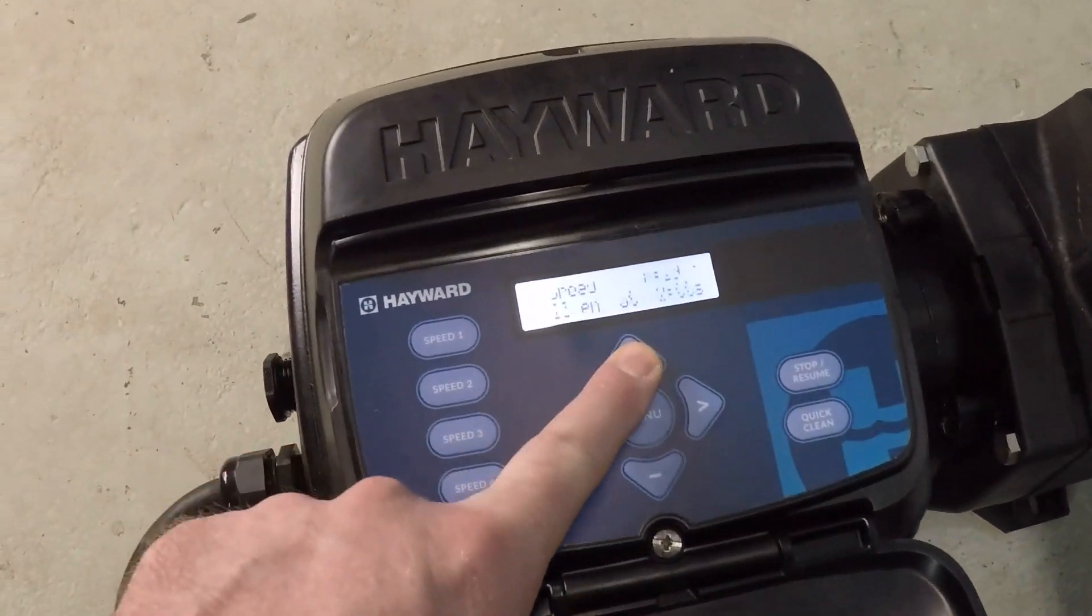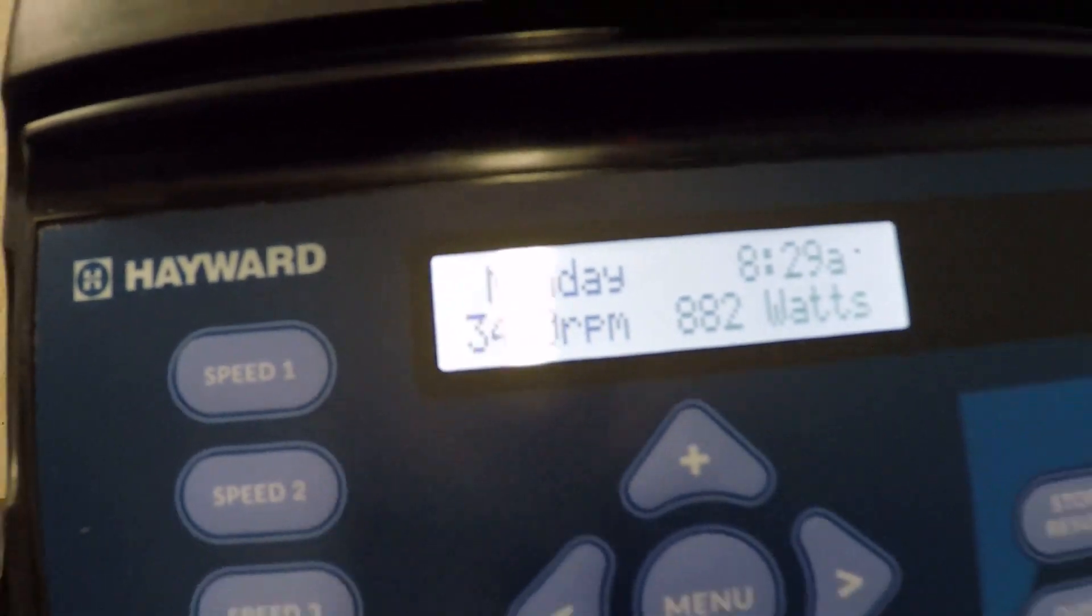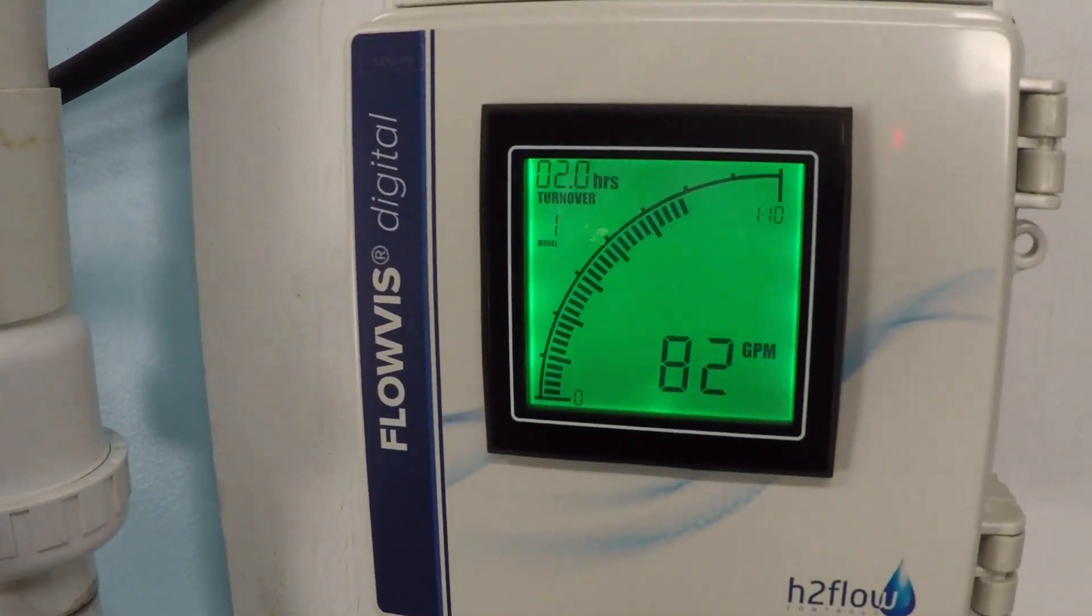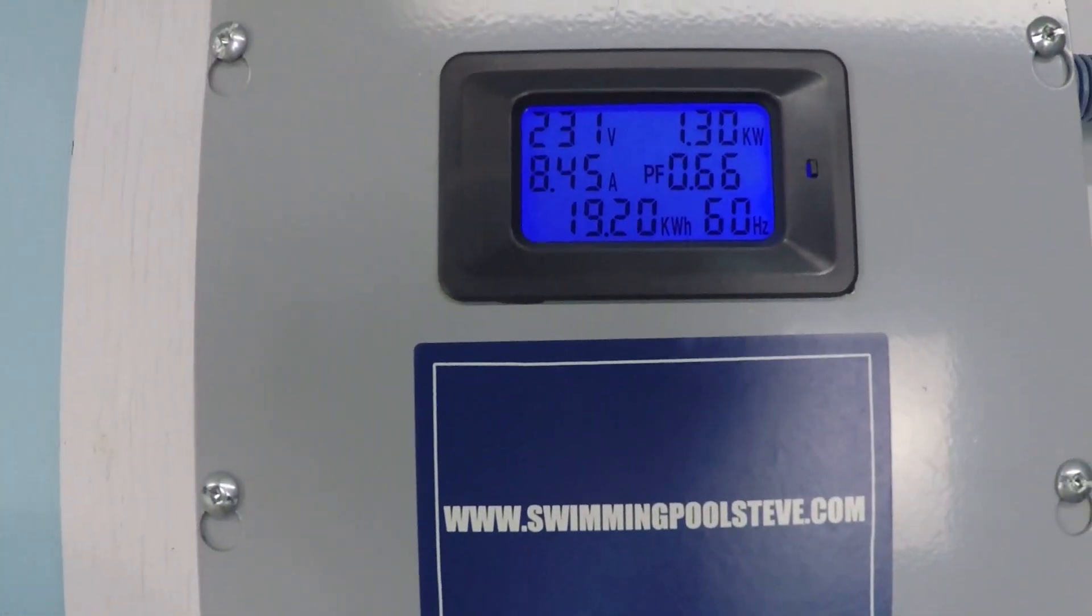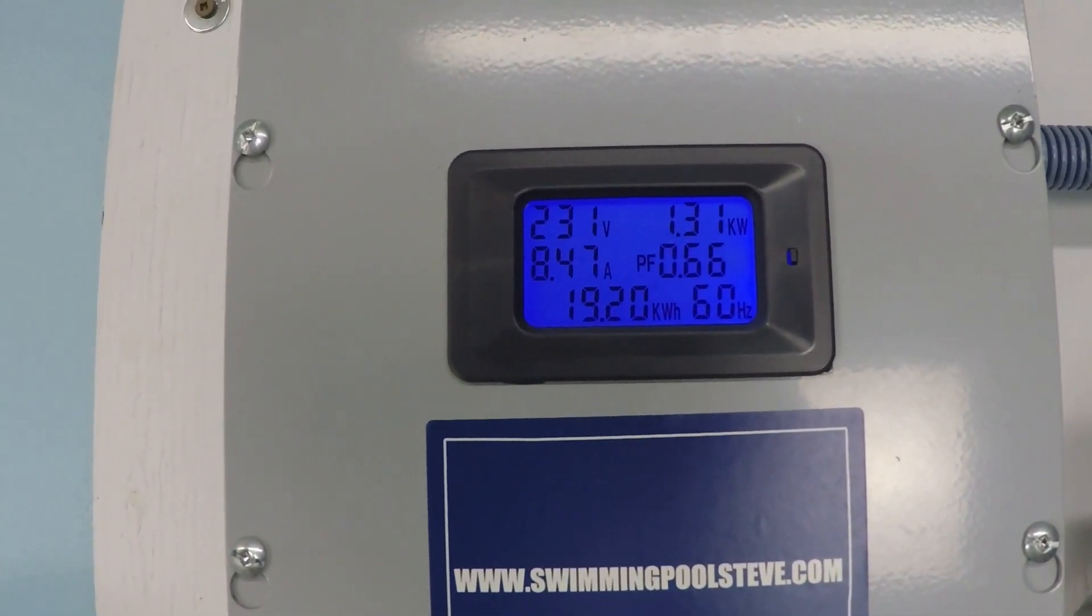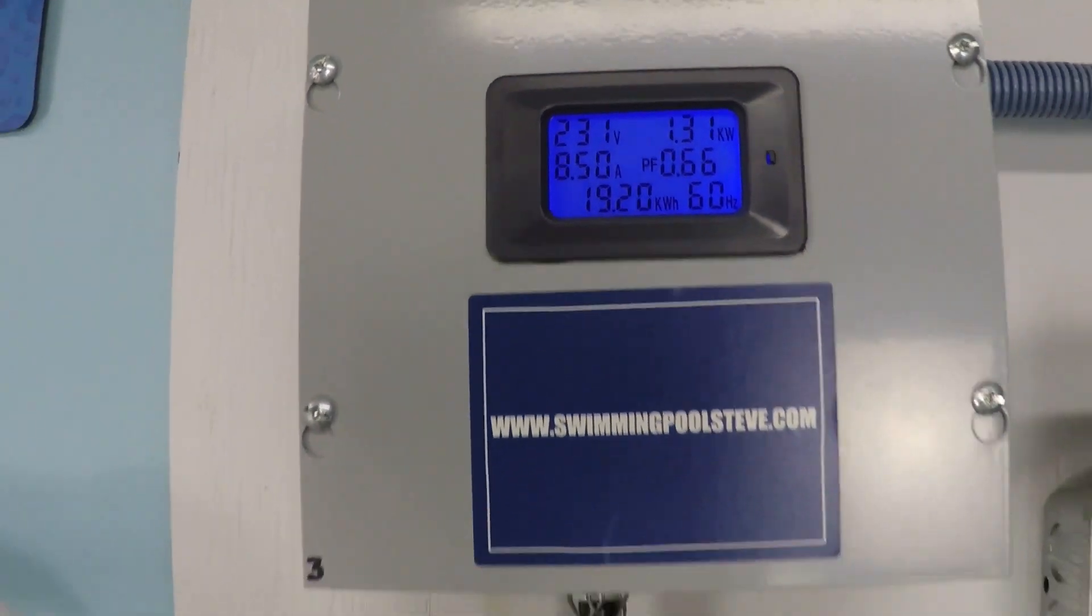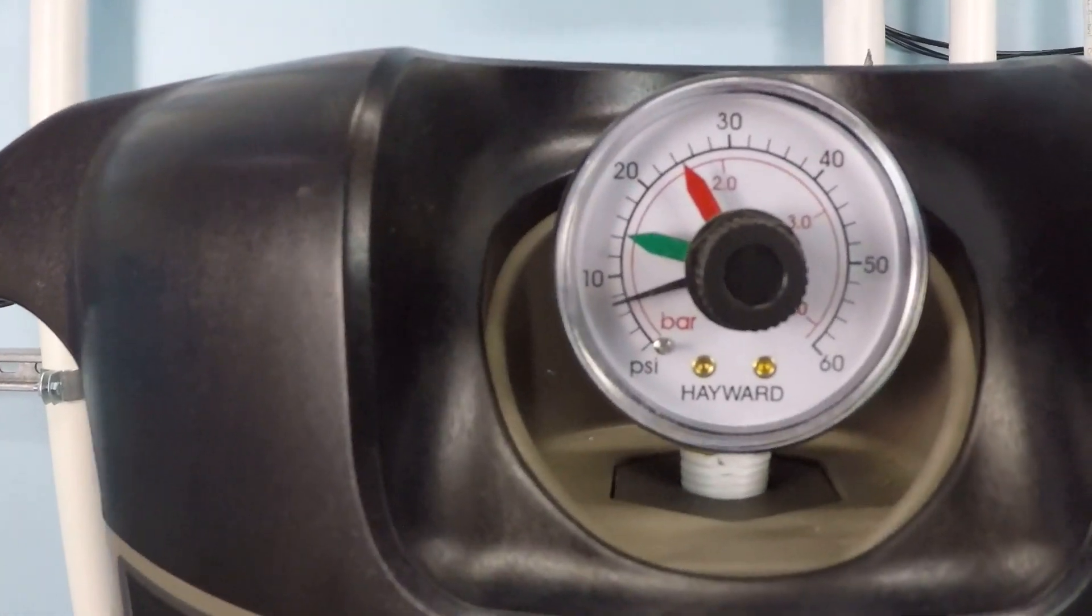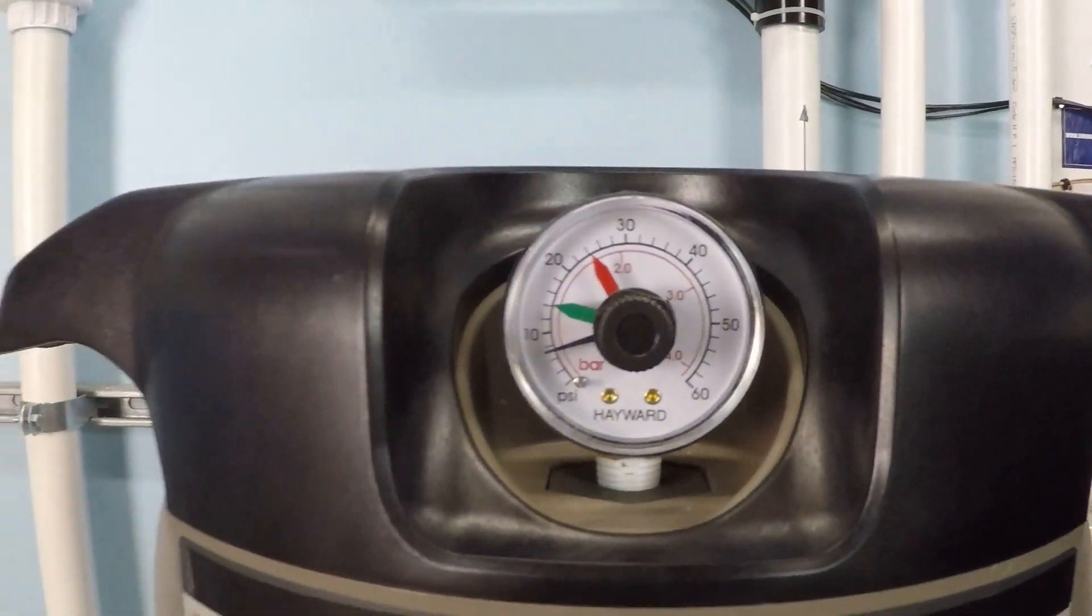And this next test will be maximum speed. 3,450 RPM. 83 gallons per minute. 1.3 kilowatts, 1,310 watts, and on the left hand side you see about 8.5 amps at 230 volts. Let's take a look at the pressure here. About 8.5 psi.